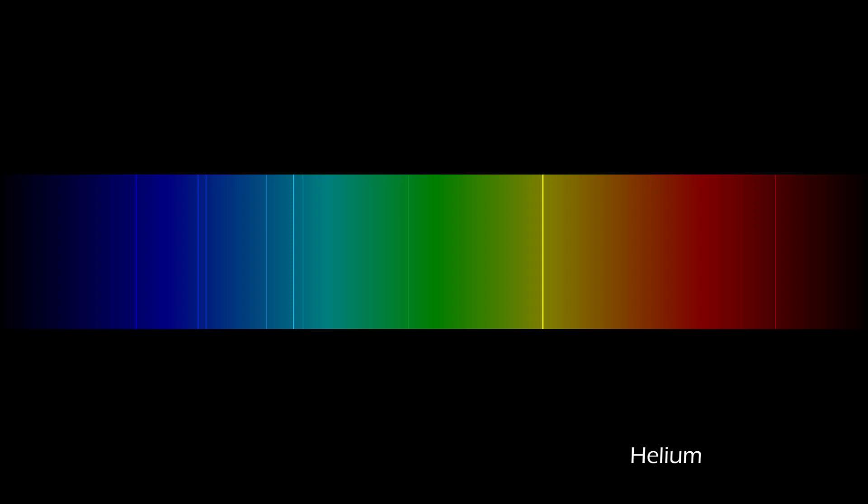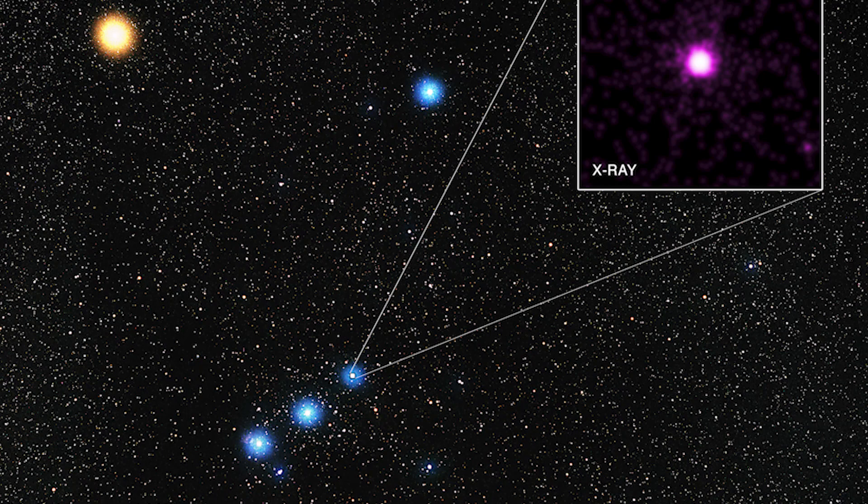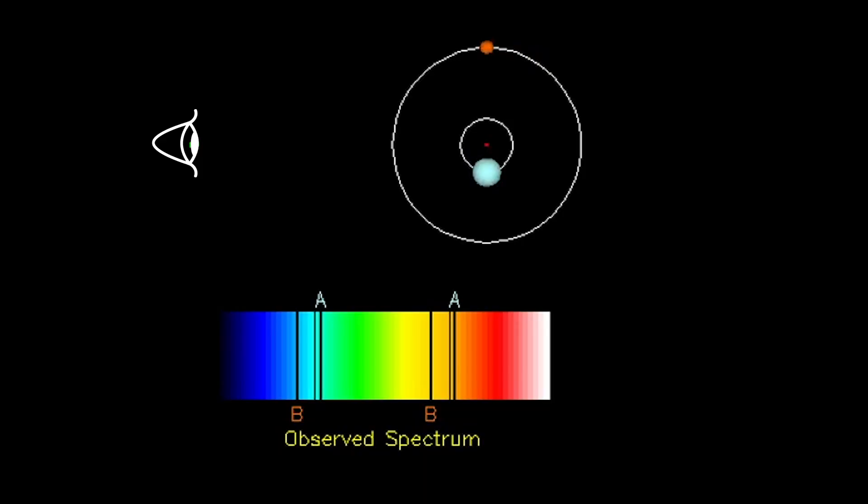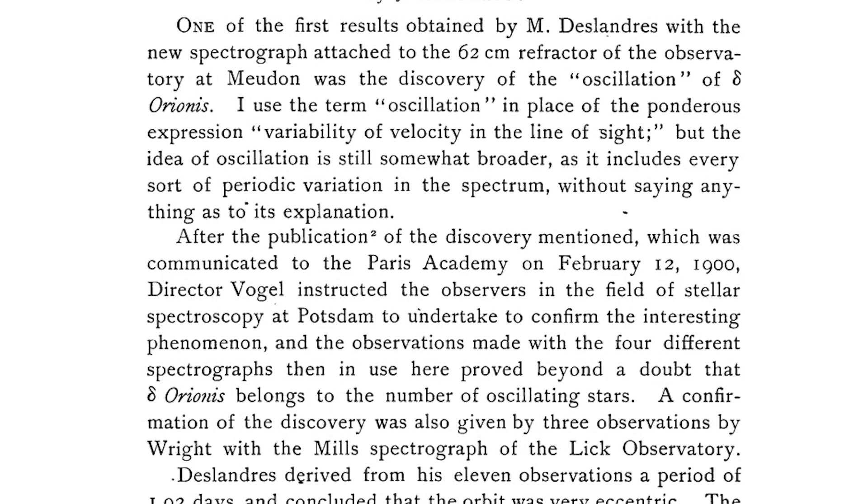In 1904, the German astronomer Johannes Hartmann deduced the presence of the interstellar medium from the study of the spectra of the binary star Delta Orionis. Due to the Doppler effect, the spectral lines in the light emitted from each star shift first towards the blue, then towards the red. But Hartmann noticed that there were other spectral lines of the element calcium that appeared to remain stationary and not be affected by the motion of the stars. Since no interstellar cloud can be detected towards Delta Orionis, he attributed those to the presence of diffuse gas along the line of sight to the star.